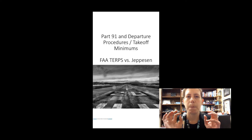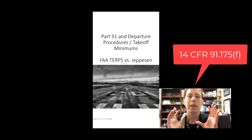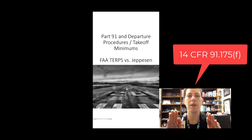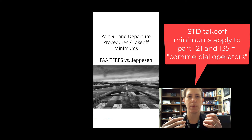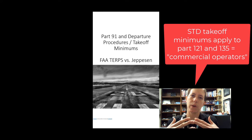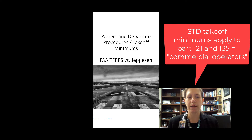So first of all, under Part 91, if you read the regulation, it says that the one and two engine takeoff minimums and the three and four engine takeoff minimums requiring a certain amount of visibility for takeoff only apply to commercial operators. If you are operating under Part 91, you are not a commercial operator. If you are operating under Part 121 or Part 135, then you are a commercial operator and takeoff minimums printed under standard takeoff minimums do apply. But let's take a look at that with a specific example.